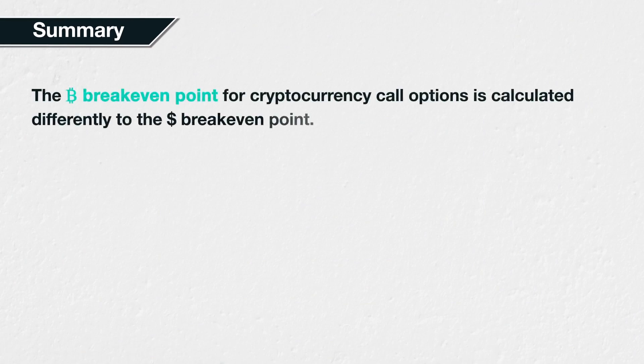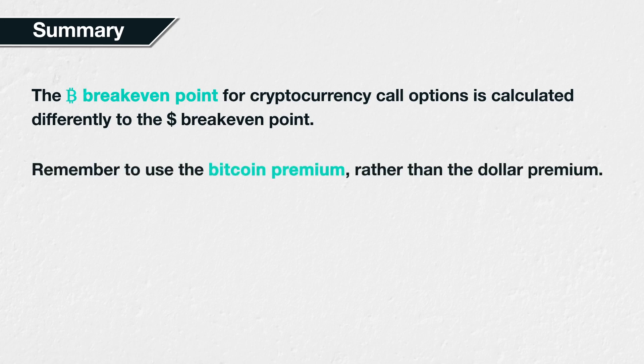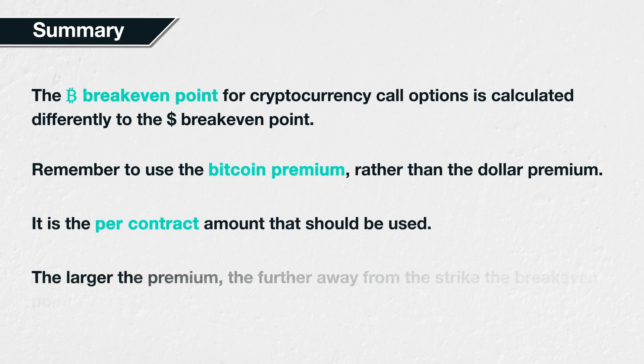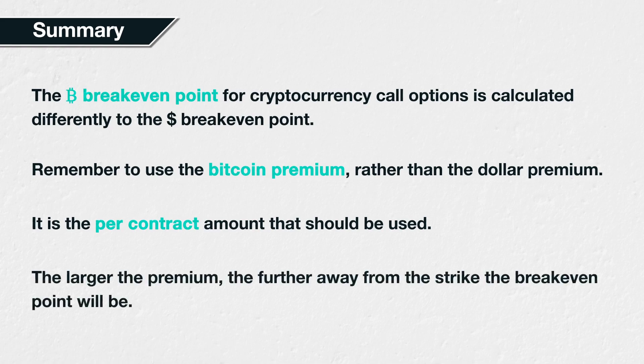In summary, the breakeven point for cryptocurrency call options is not calculated in the same way as for dollar options. For this reason it's important not to confuse the two calculations. Remember to use the Bitcoin premium of the option rather than the dollar equivalent. It is also the per-contract amount that should be used, regardless of the actual position size. The larger the premium of the option, the further away from the strike price the breakeven price will be.